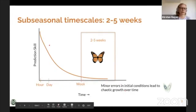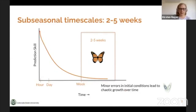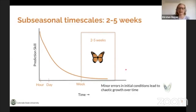When we're at weather time scales — these hour and day predictions — we can see really high prediction scales. But as we approach a week, we can see this start to decrease in prediction scale. This is due to minor errors in initial conditions of our models that can lead to chaotic growth over time. You can think about this as the butterfly effect.